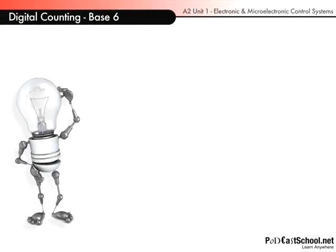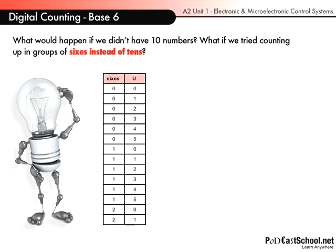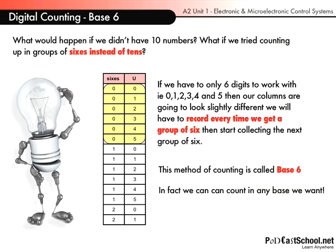Now why am I telling you that? Well if we have a look at base 6, instead of using 10 numbers — 0 to 9 — we use only 6. This time we're running from 0 to 5, and then when we reach 5 we reset to 1 and 0. So instead of 10 figures we're only using 6. That method of counting is called base 6, and in fact we can count in any base we like — 3 or 4 or whatever. We've all just grown up counting in base 10, but there's no need really.